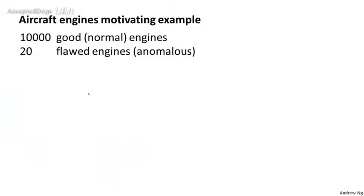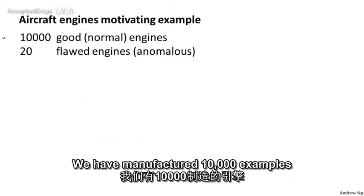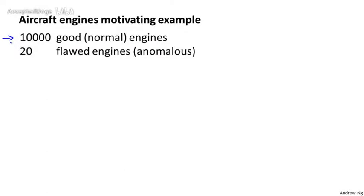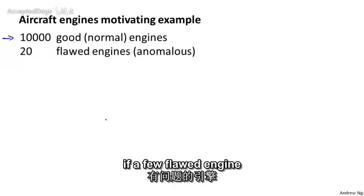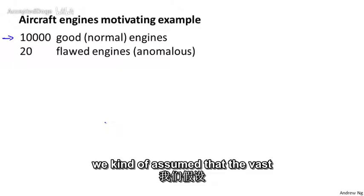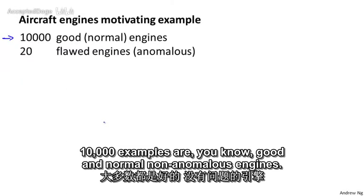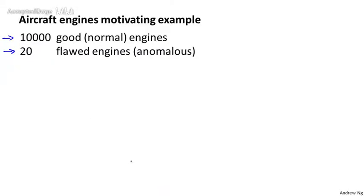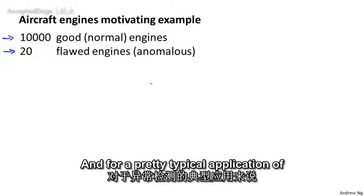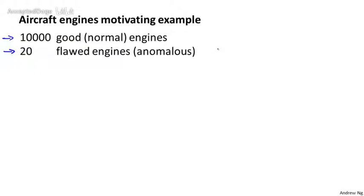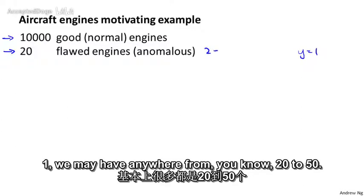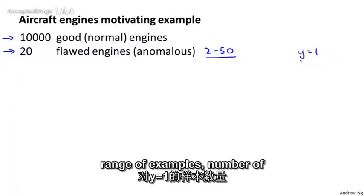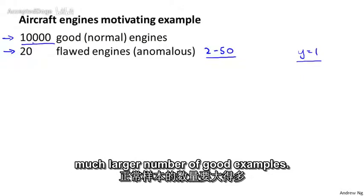Here's a specific example. Let's say we have 10,000 examples of engines that as far as we know are perfectly normal, good aircraft engines. It's okay even if a few flawed engines slip into this set of 10,000, but we assume the vast majority are good or normal, non-anomalous engines. And let's say that historically we end up with 20 flawed or anomalous engines as well. For a typical anomaly detection application, the number of known anomalous examples with y=1 may range from about 20 to 50.